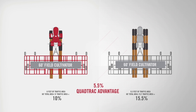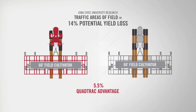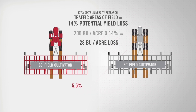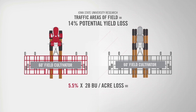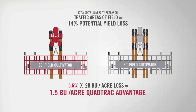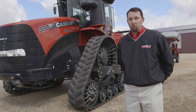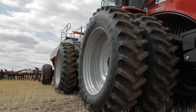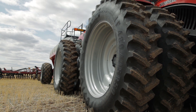What does that mean in terms of yield loss? Based on Iowa State University research, a grower could see 14 percent more yield loss in traffic areas versus the rest of the field. If we were growing 200 bushels per acre of corn and 14 percent of that is lost, we'd be losing 28 bushels an acre in the traffic area. Carrying over that 5.5 percent advantage in traffic area of a track tractor versus a wheeled tractor, you'd have a 1.5 bushel per acre advantage — which can add up to a lot of lost profit potential. Ground compaction can also be reduced with wheeled tractors by looking at different tire options. Case IH offers a full variety of tire sizes and types, such as Increased Flexion technology or IF tires, which allow the tire to carry a lower inflation pressure and with a softer sidewall, that tire can actually reduce the ground pressure or footprint of the tractor.